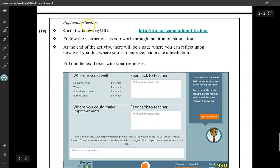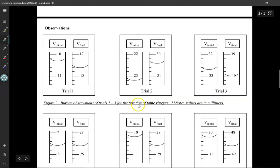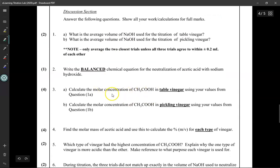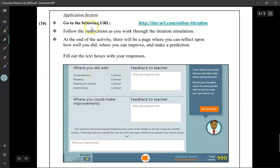Now the last part, the application section, is probably the section you want to do first. Running through this online simulation will help you to better understand what these all are and how to answer these questions over here. So I highly recommend you do the application section first. What you do is click on this link and follow the instructions as you work through a sample titration simulation.